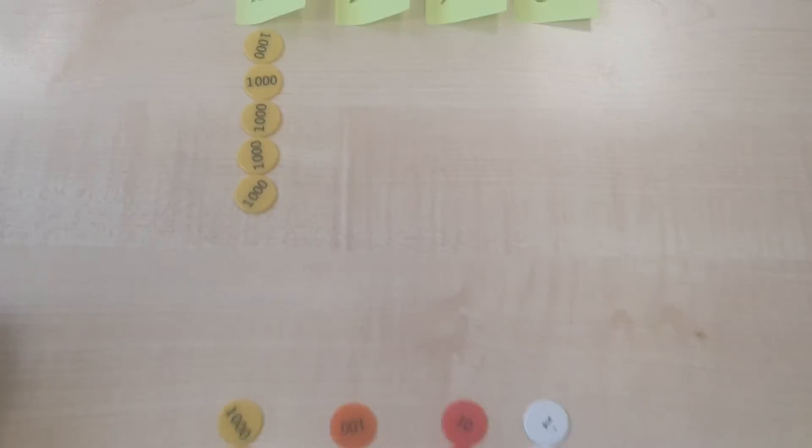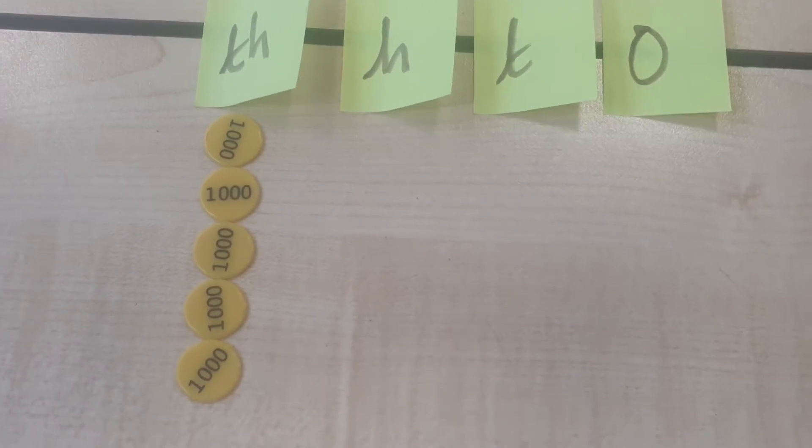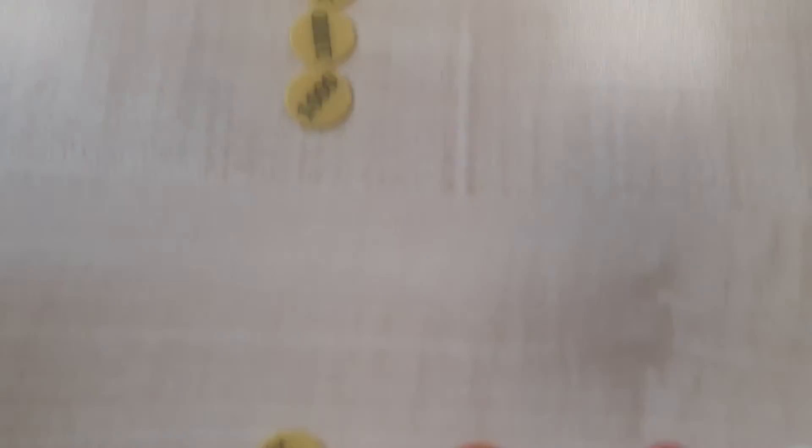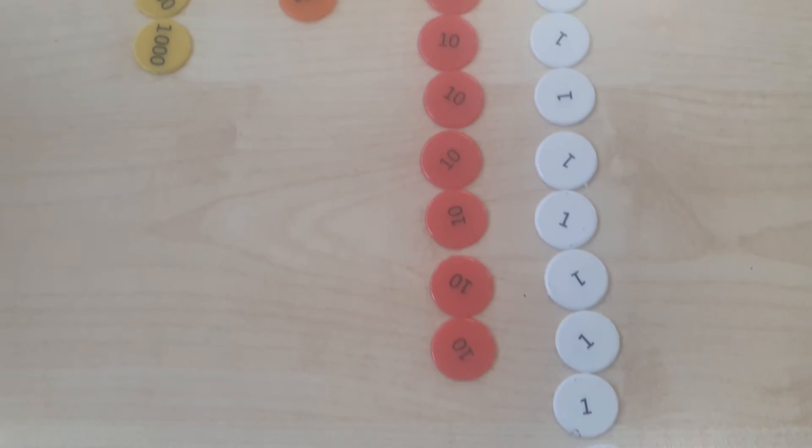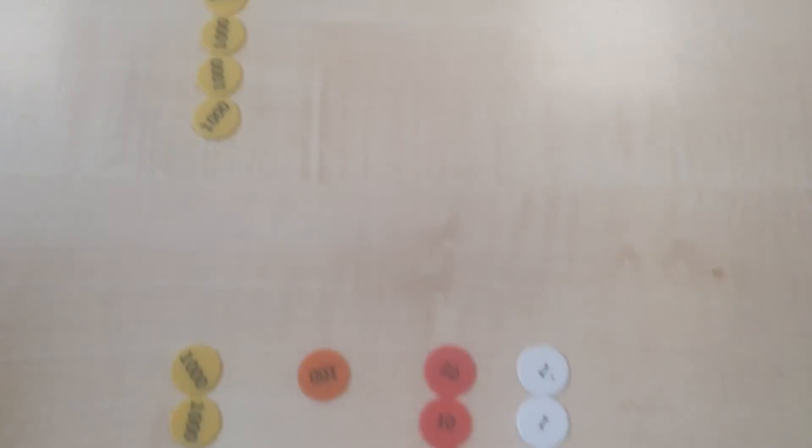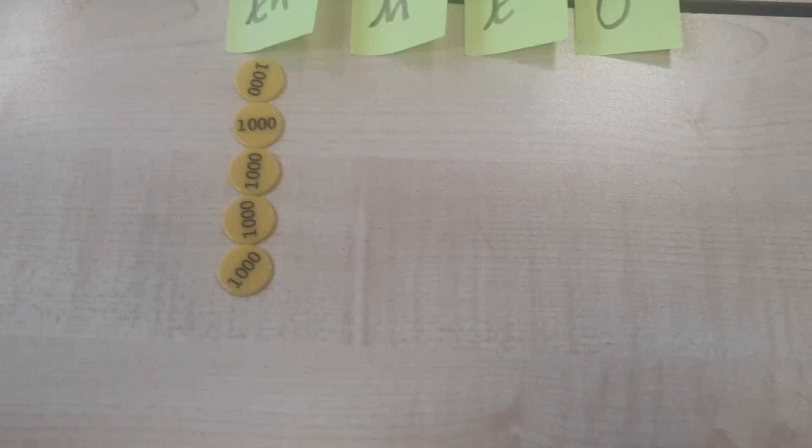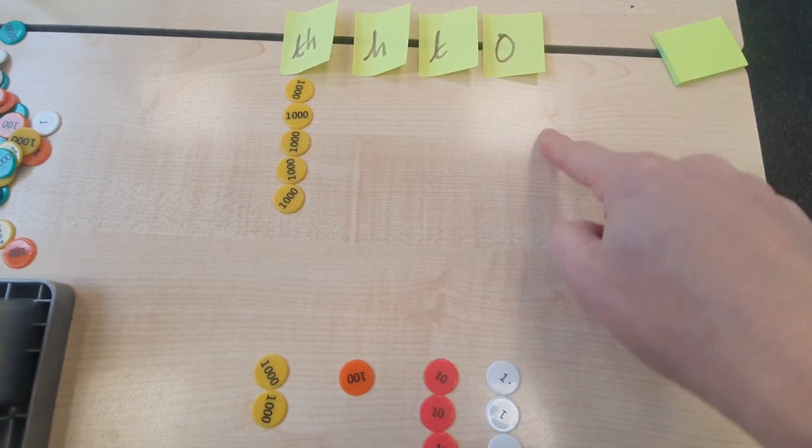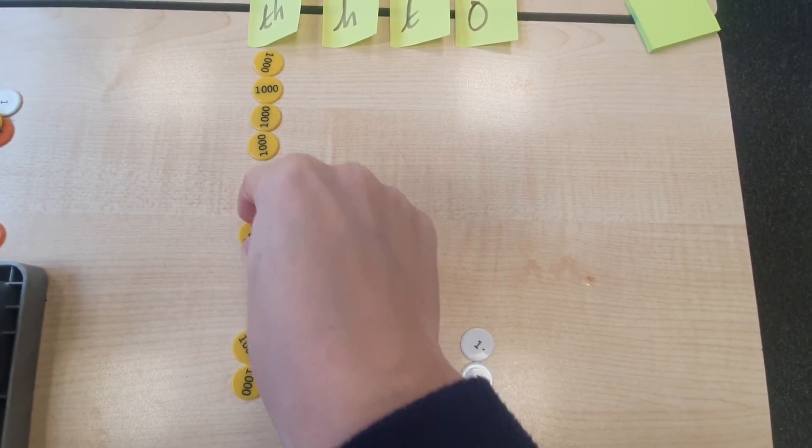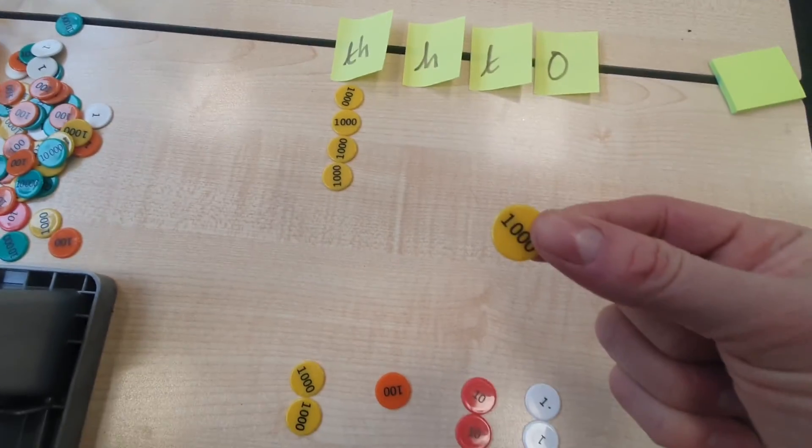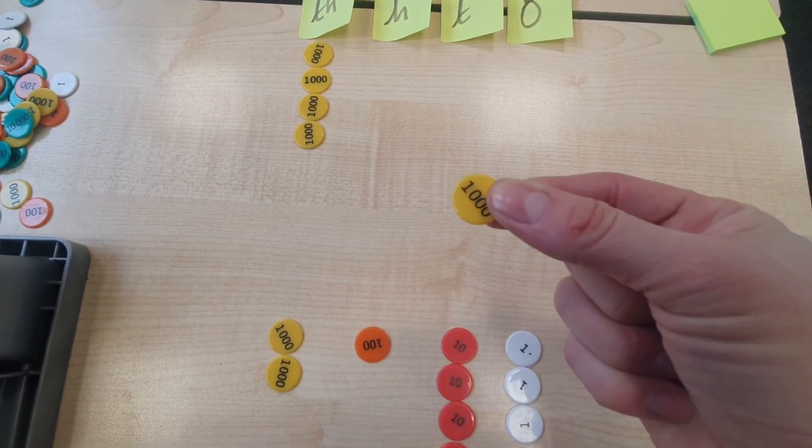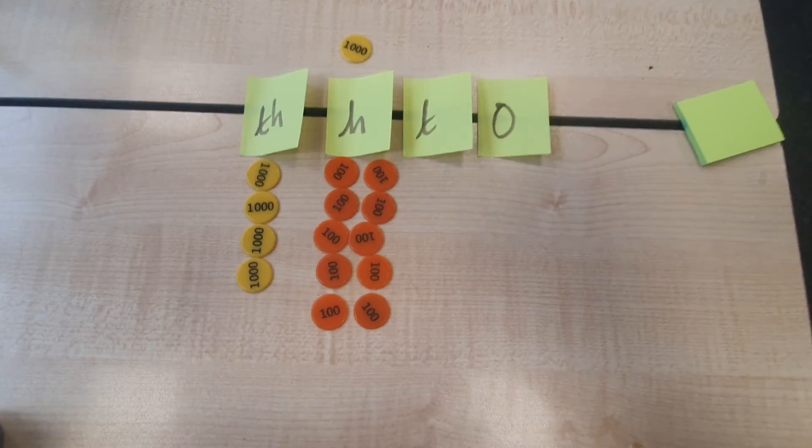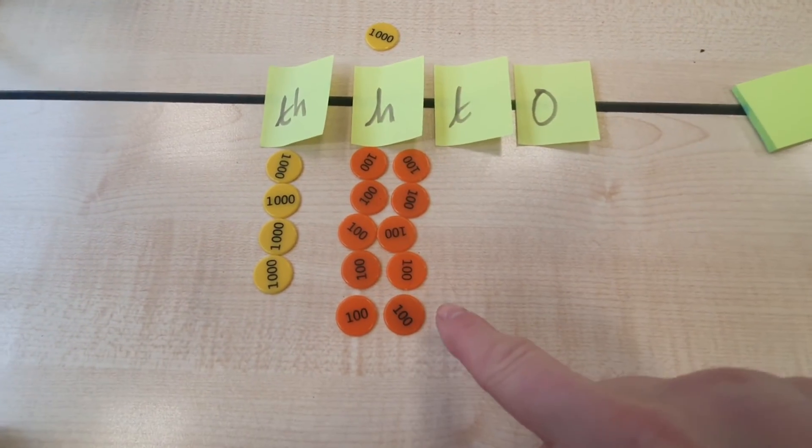Let me just show you using place value counters. So, 5,000. And we want to takeaway 2,179. Like we said before, what we've got to do is, because we had no hundreds, no tens, and no ones, we had to take a thousand and exchange that for ten hundreds. So a thousand is the same as ten hundreds.